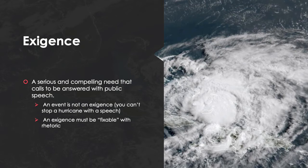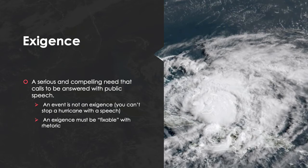The exigence would be: we need to get the people in Miami out of the path of the hurricane. The exigence is something that must be fixable with rhetoric. You cannot stop a hurricane — or perhaps more relevant to today, you cannot stop a virus simply by talking about it. In both cases of those natural disasters, you have to talk to the people. An exigence has to be something that can be fixed by rhetoric.